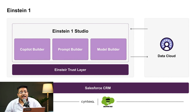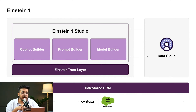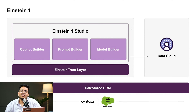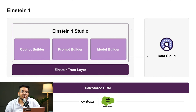Einstein One Studio is the core thing which allows everything we can do with Salesforce AI. It has three parts: the Copilot Builder, the Prompt Builder, and the Model Builder. Model Builder lets you either use Salesforce's existing models or create your own. Prompt Builder lets you pre-configure prompts so you don't have to write a detailed prompt again and again — you can use certain keywords or phrases rather than writing the entire complete prompt repeatedly.